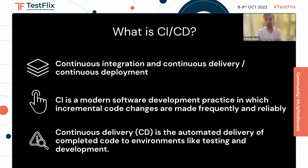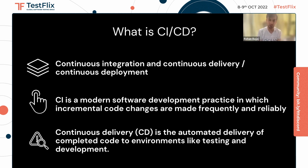Let's first begin with what is CI/CD. Most of us might be familiar with continuous integration and continuous delivery or continuous deployment, what CI/CD commonly refers to, and folks might have used various CI/CD tools like Jenkins or CircleCI. So what does CI/CD mean? CI is a modern software development practice in which incremental code changes are made frequently and reliably.